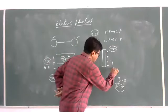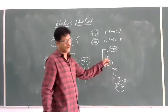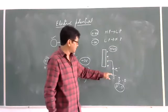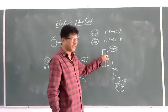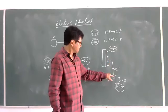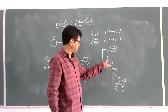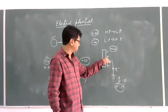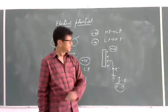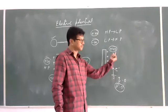The electrons will drift from earth to the body in this case. One electron will come and cancel one positive charge, the second will cancel the next, and so on — until the potential of that end becomes zero. If they cancel each other, the potential becomes zero. If there is no potential difference, there will be no flow of charges.